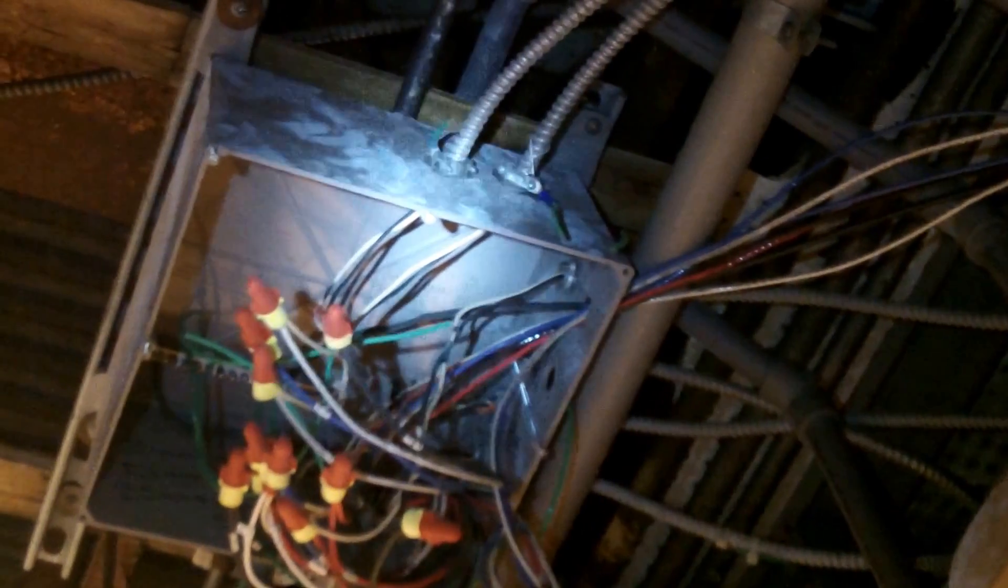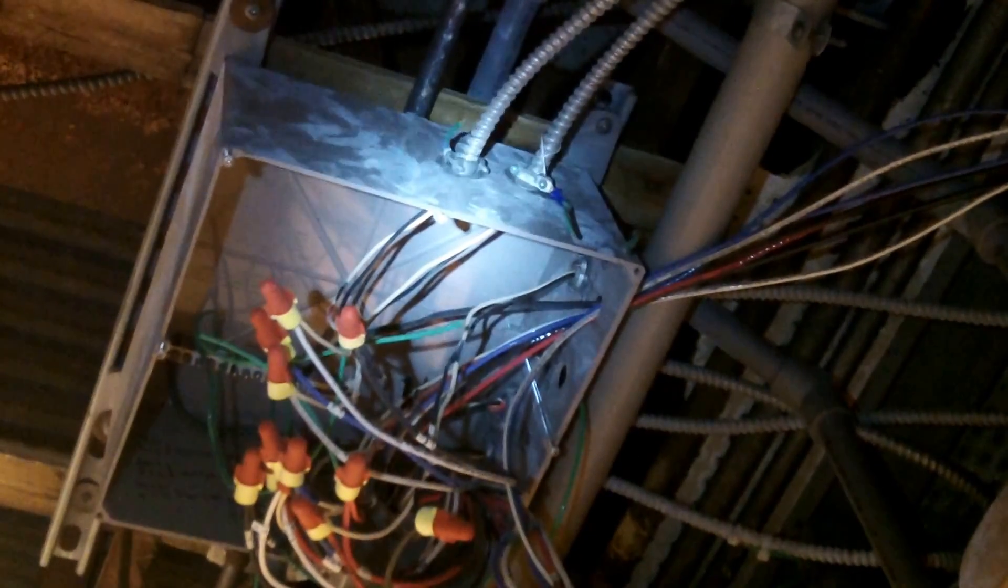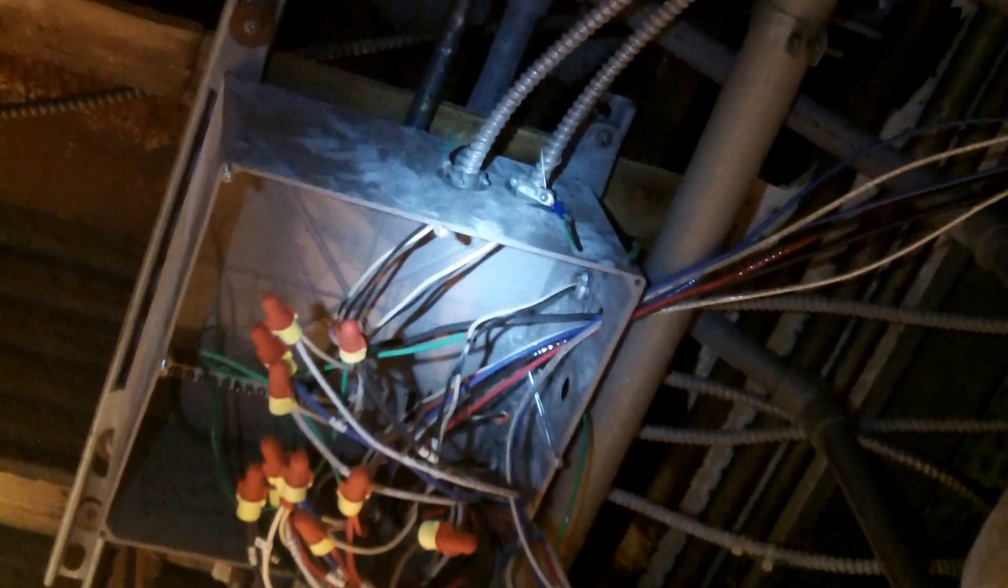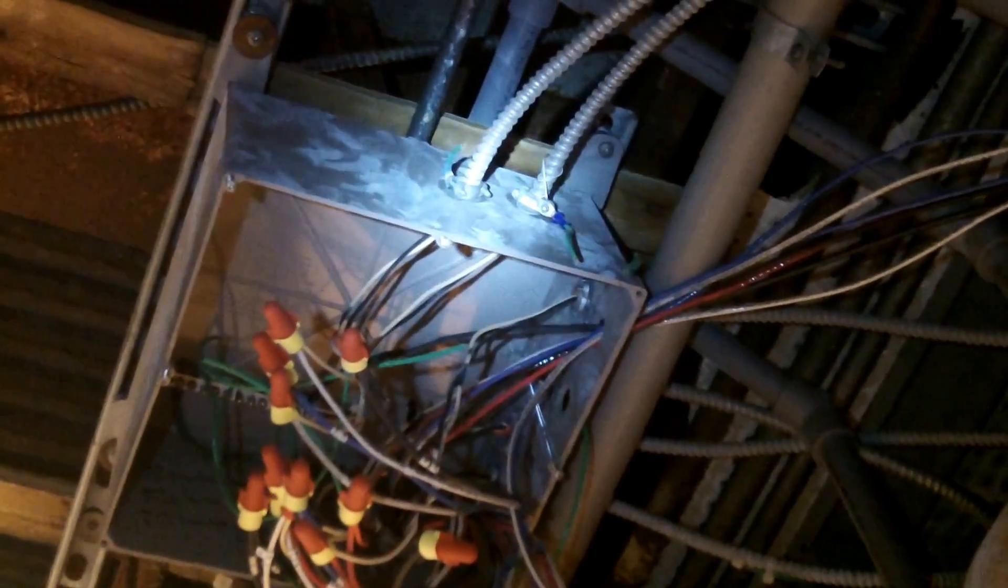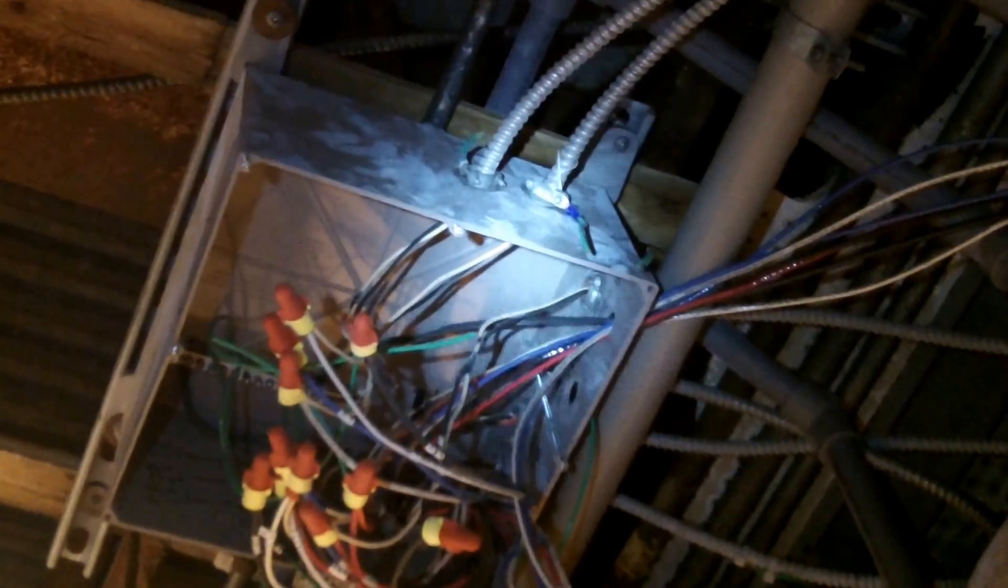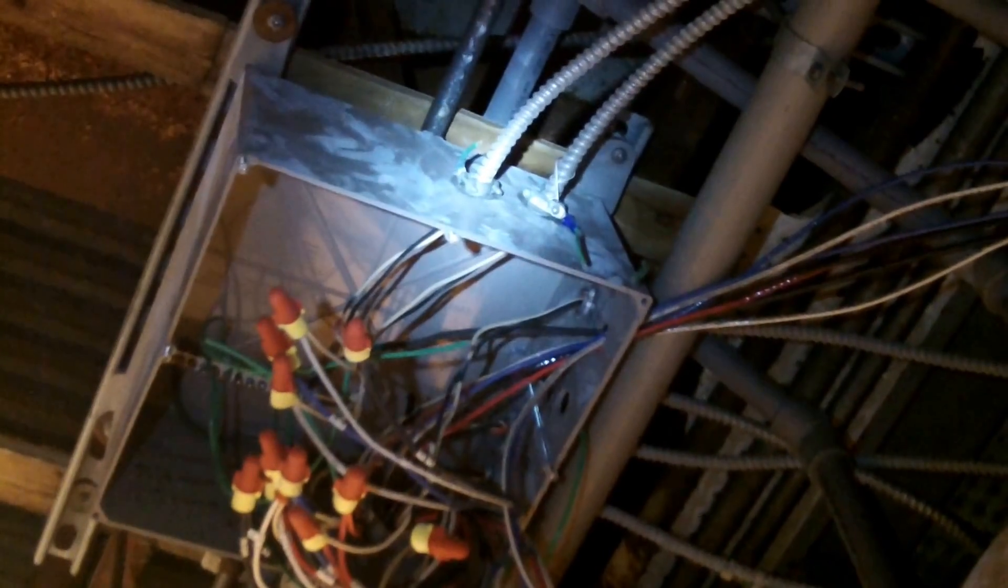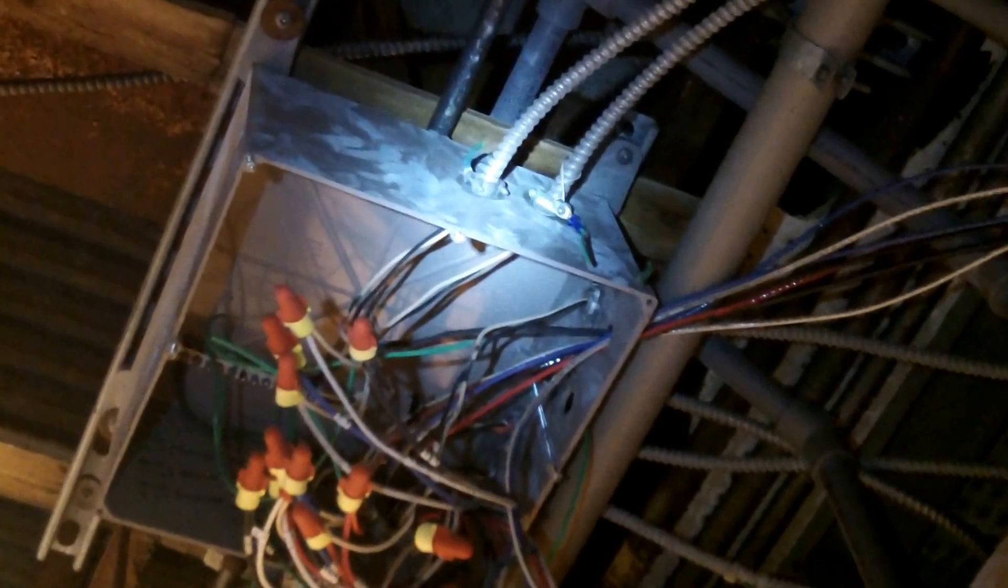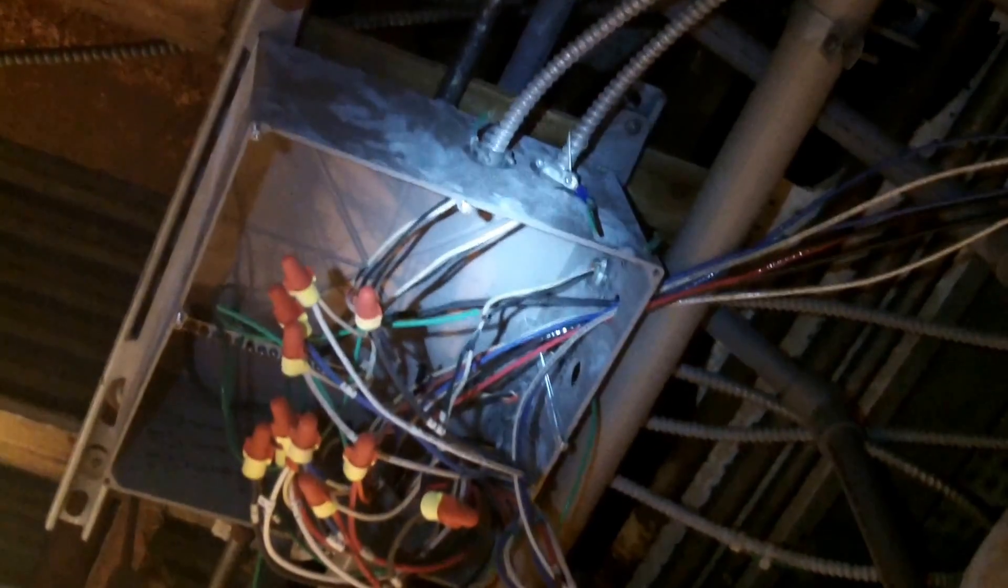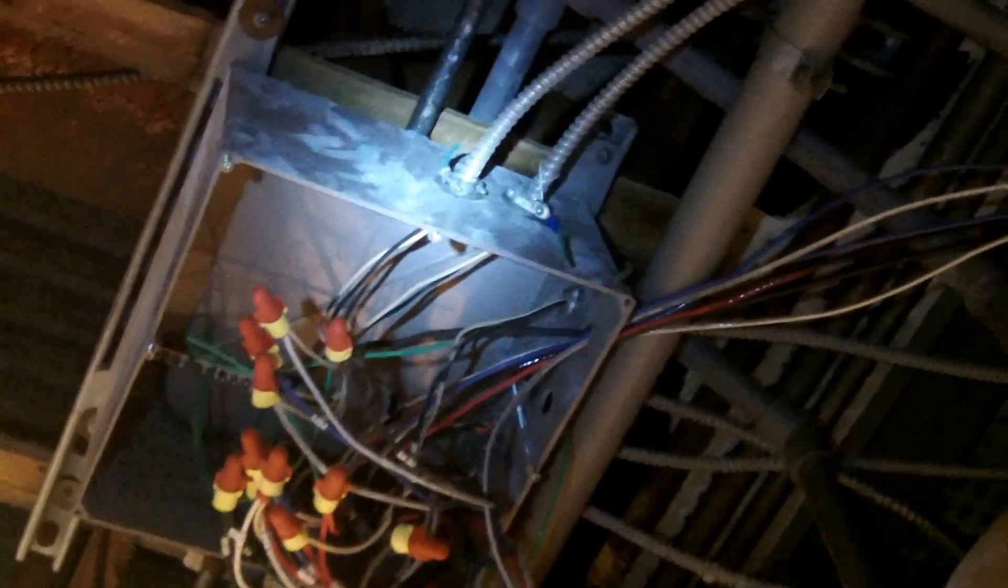This is not permitted in section 314.3. However, there is an exception that does allow these AC cables and metal pipes to be used with a non-metallic box if there's an internal bonding means to bond all of the cables and pipes together on the inside of the box.